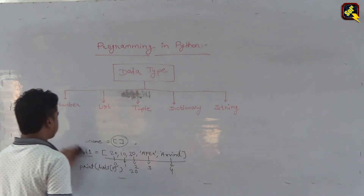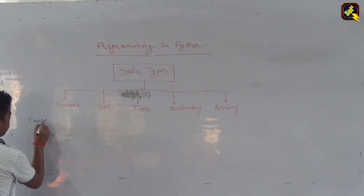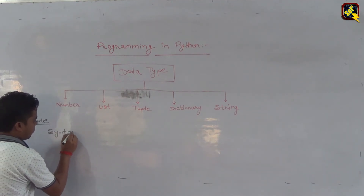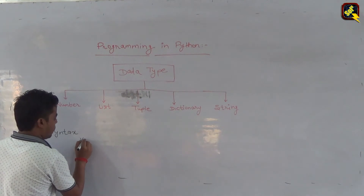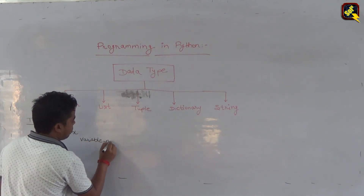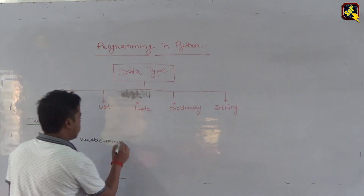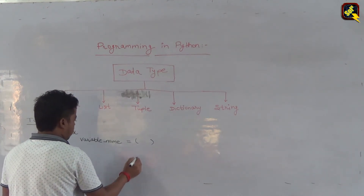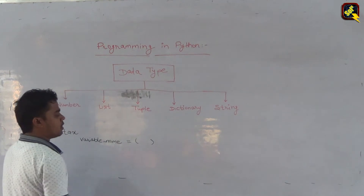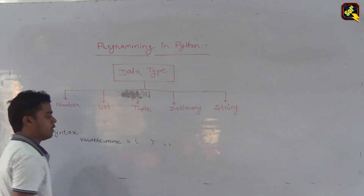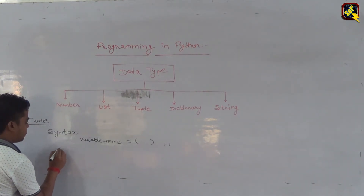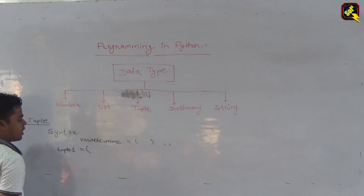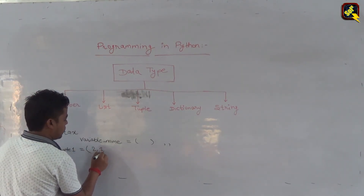The next data type is Tuple. The syntax is: variable name equal to, and this uses parentheses or small brackets. Within these brackets all the values are stored, similar to list, separated by commas. For example, the variable name is tuple1 and the values stored are 2, 3, 4.